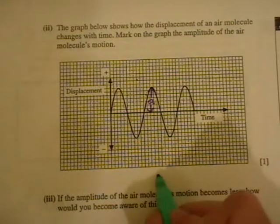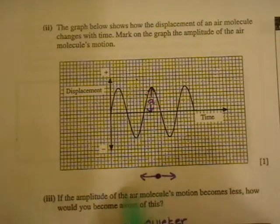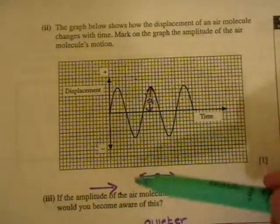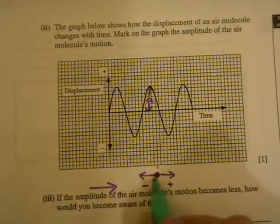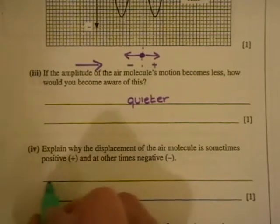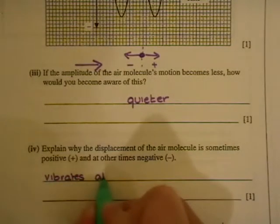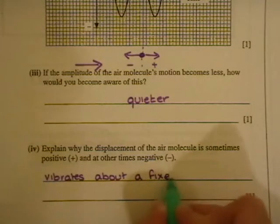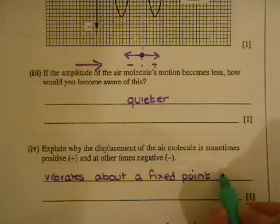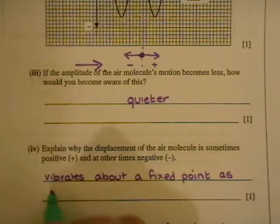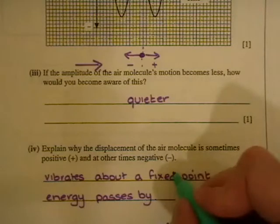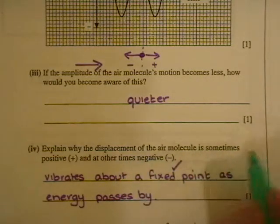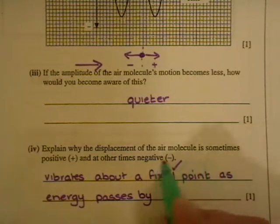Explain why the displacement of the air molecule is sometimes positive and sometimes negative. So this idea is of your air molecule which moves one side or another as the wave passes by. And that's being translated onto this is its displacement from its rest position there. So one side and the other side. And since they're different directions, they just give one direction a positive number and the other direction negative. And so explain why it is sometimes positive and other times negative: So it vibrates about a fixed point, or a rest position you could write in there, as the energy passes by.